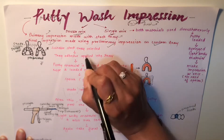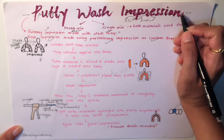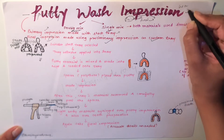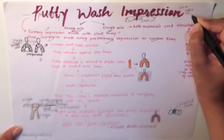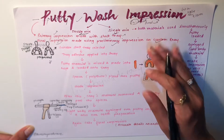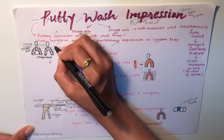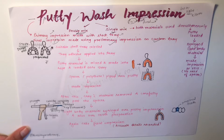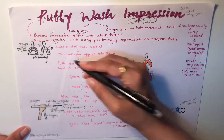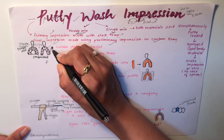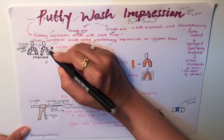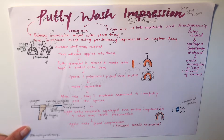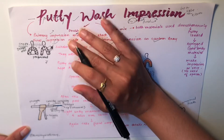There are two methods of putty wash impression: double mix and single mix. The indication is that it is used in most clinical situations where you use heavy bodied and light body impression material, or elastomeric material. The advantages are that stock trays are readily available and, being metal, they are rigid and do not distort. The disadvantages are that metal stock trays require sterilization, and more impression material is required for this technique.